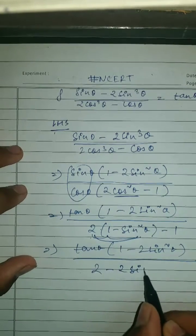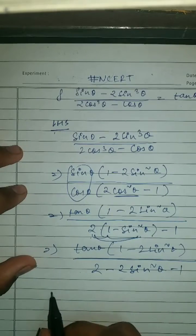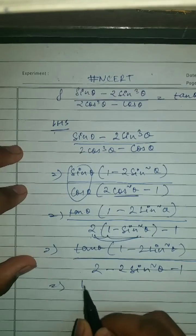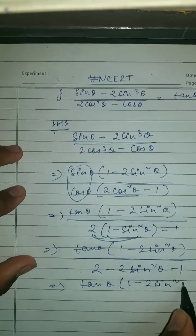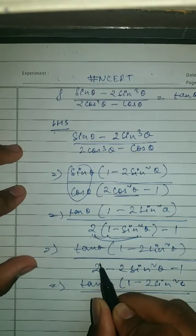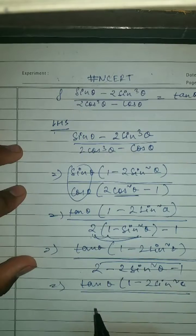Which is equal to tan theta times 1 minus 2 sine square theta upon, let's see, 2 minus 1 is 1, so 1 minus 2 sine square theta.